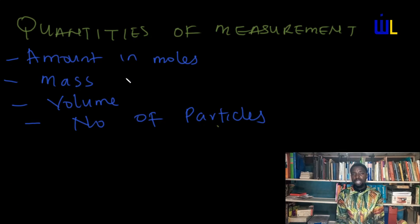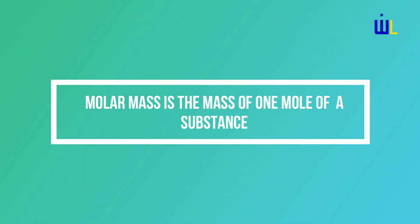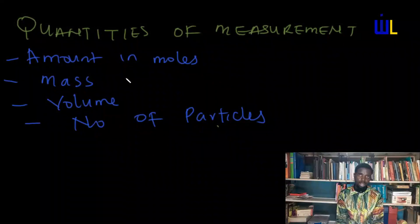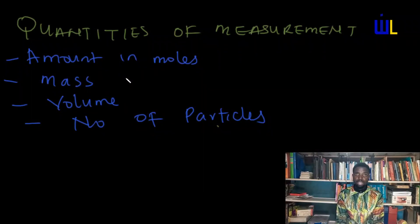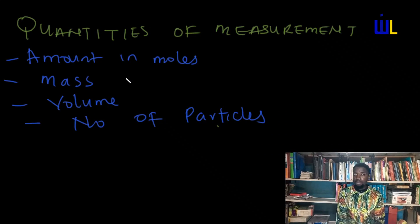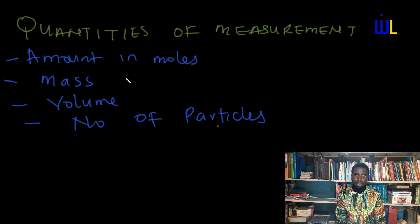Before we leave the concept of mass, it is important that you understand a particular term known as molar mass. The molar mass of a substance is simply defined as the mass contained in one mole of that substance. So the mass of one mole of a substance simply describes its molar mass. For example, when I say what is the molar mass of sodium chloride, I am looking at the mass contained in one mole. Mathematically, if I am to express molar mass of elements: